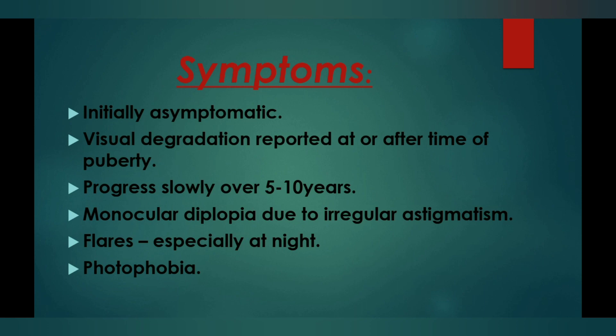The symptoms of keratoconus: it is initially asymptomatic. Visual degradation is reported at or after the time of puberty, and the condition progresses slowly over five to ten years. Monocular diplopia — double image formation in one eye — is seen due to irregular astigmatism. Flares are seen especially at night, and photophobia is also present in keratoconus patients.